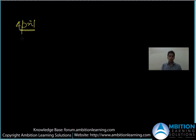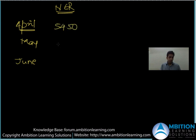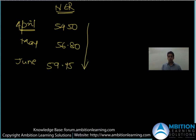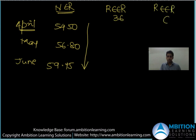Let's look at how the index looks and how people monitor it. In April, May, and June, the nominal exchange rate data shows: April was close to 54.50, May was 56.80, and June was 59.75. So the Indian rupee had depreciated versus the dollar. Now how does the real effective exchange rate index look?